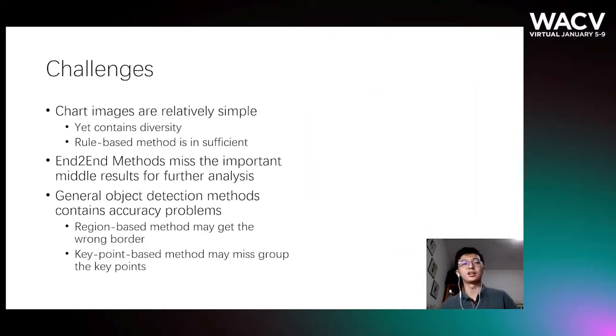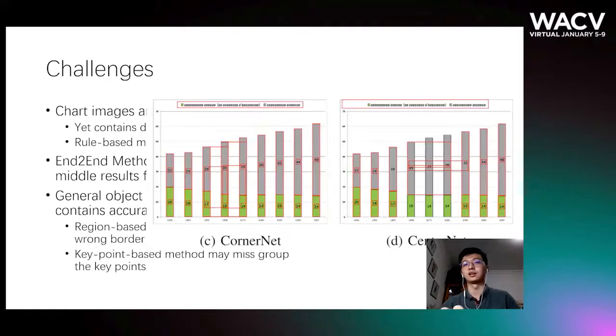For key-point-based methods, they may misgroup the key points, like the examples here. It actually detects the border corners very correctly, but it misgroups some points with others which actually don't belong to the same group.